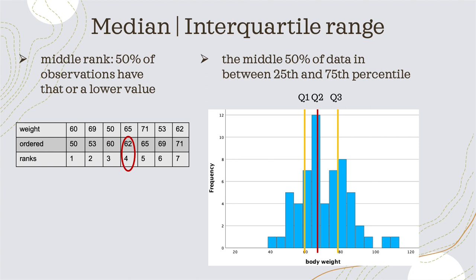To calculate the median, we take all data points and order them in ascending order. Then we assign a rank to each value. Here we have seven values, all different, so we have ranks from one to seven. The middle one is rank four, which belongs to the value of 62 — so that is our median.